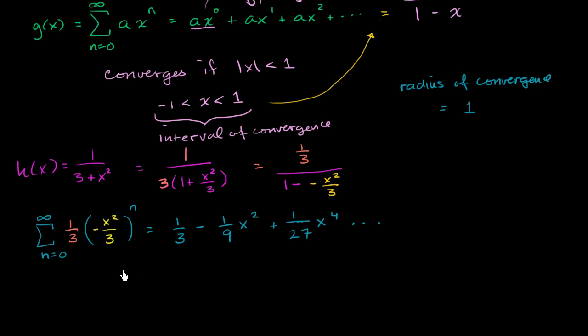The interval of convergence is the interval over which the absolute value of your common ratio is less than 1. So the absolute value of negative x²/3 has to be less than 1.